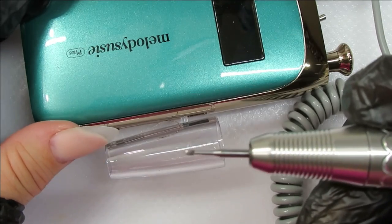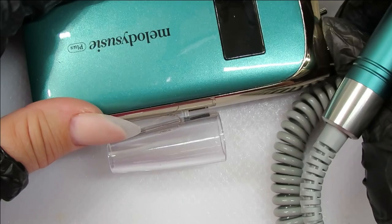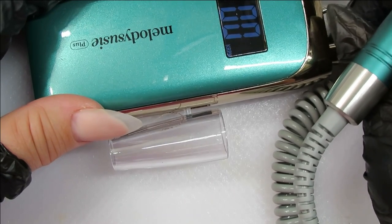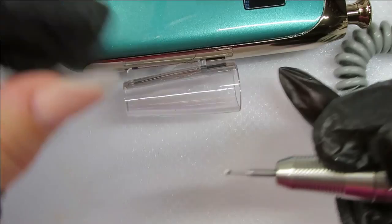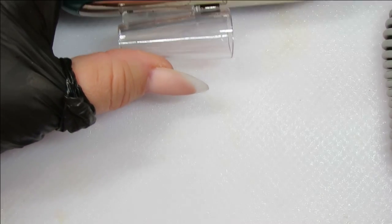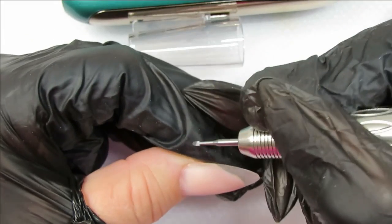All right, so I put in the cuticle bit and I'm going to do a little bit of work on my thumb. Go up to five, so we need to turn it in forward. Okay, here we go.